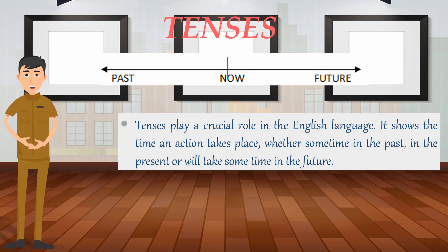First, tenses. Tenses play a crucial role in the English language. They show the time an action takes place — whether sometime in the past, in the present, or sometime in the future. The verb indicates the time.